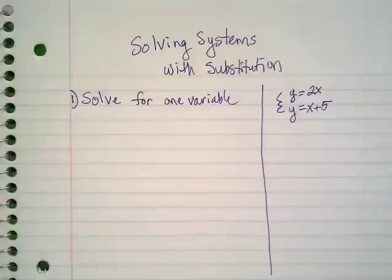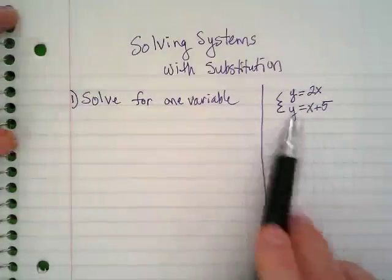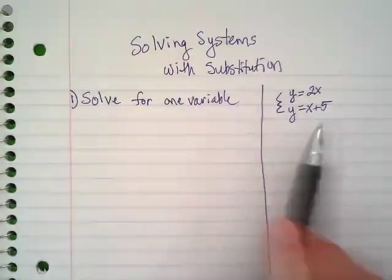We could have used this method of solving systems with the last examples, but if you remember, both of those first equations were in standard form, and we would have wanted to solve them for y so that y is by itself. In this case, we do have both of these equations where y is by itself. So we're going to...